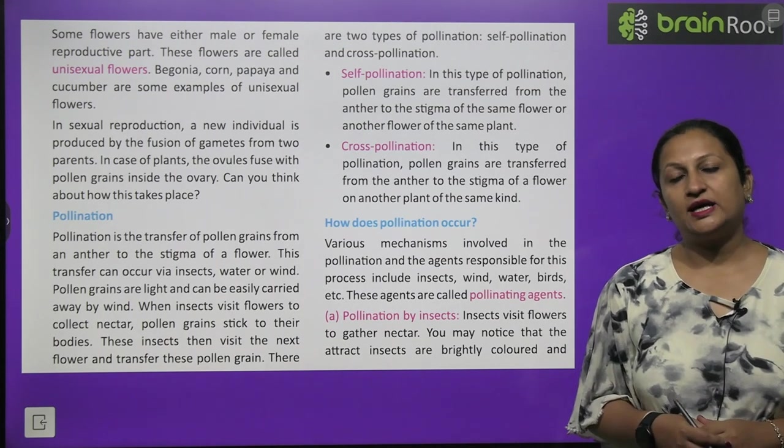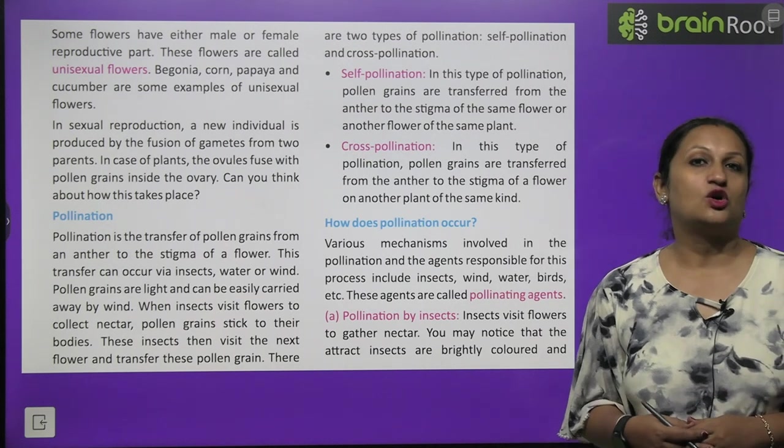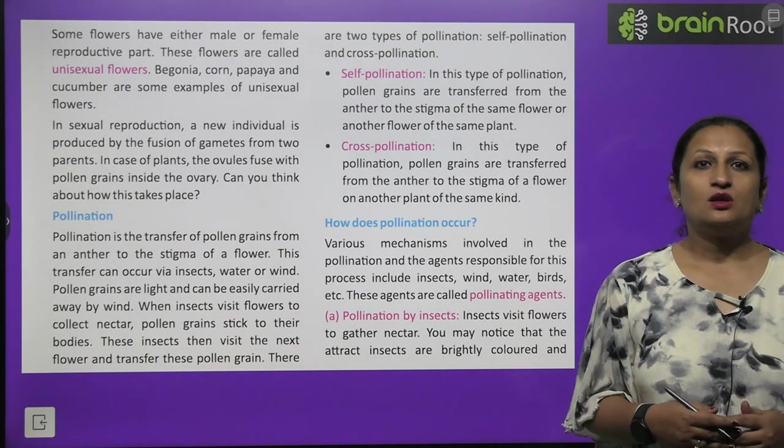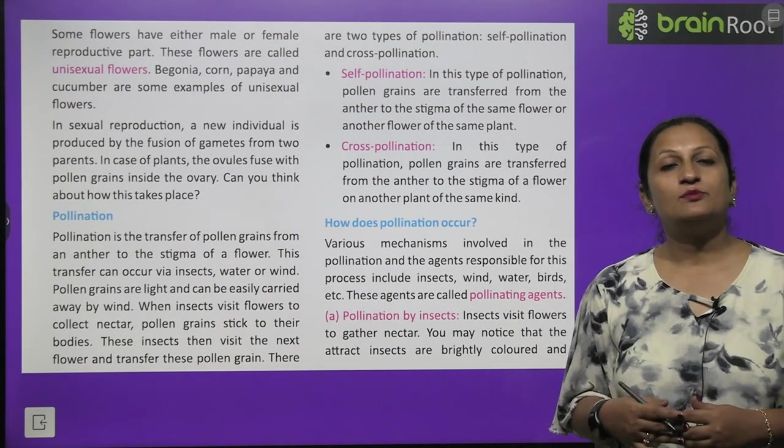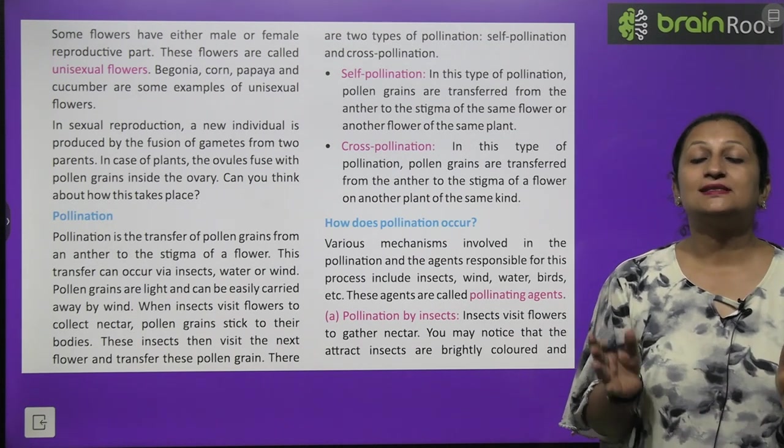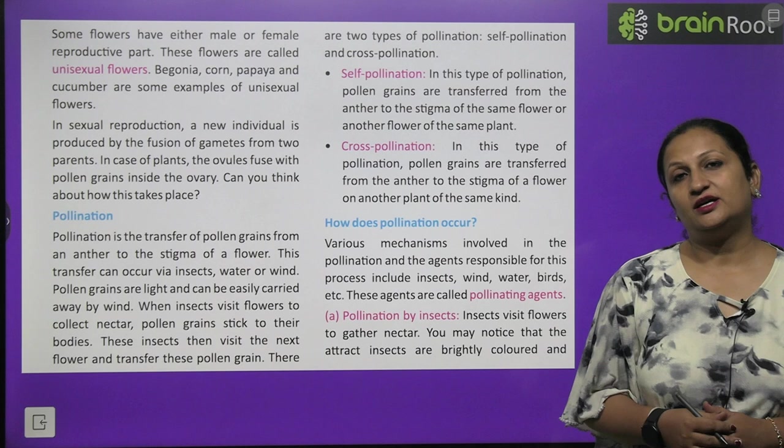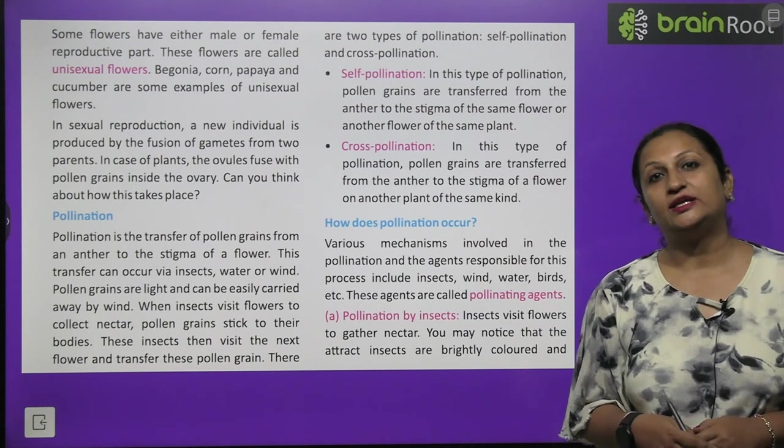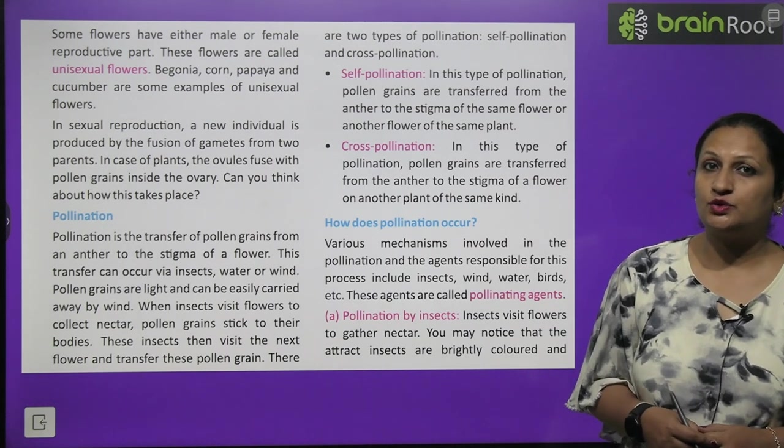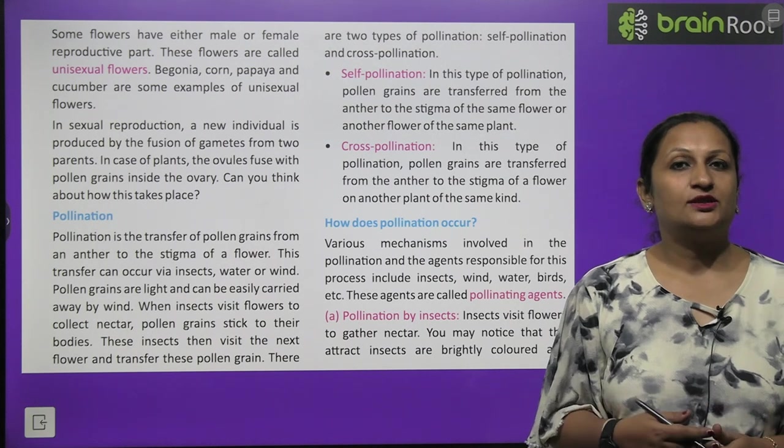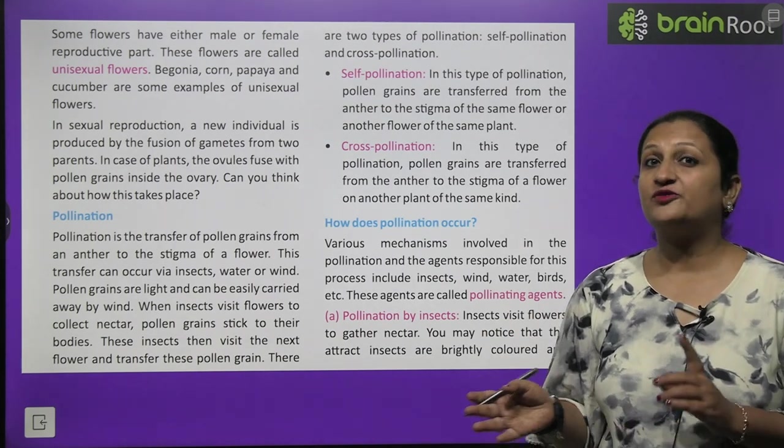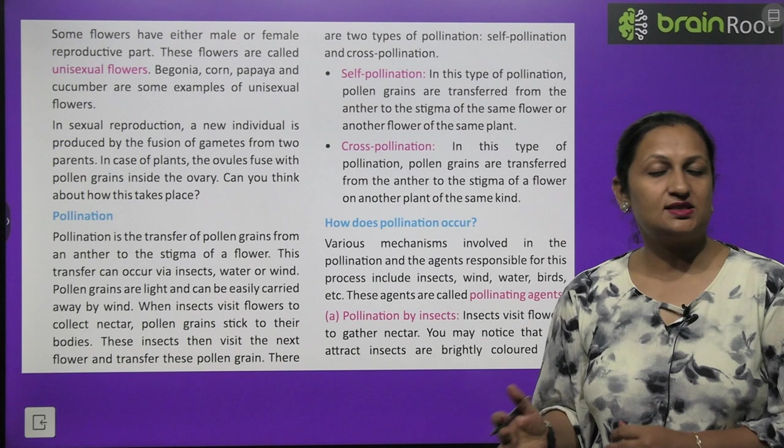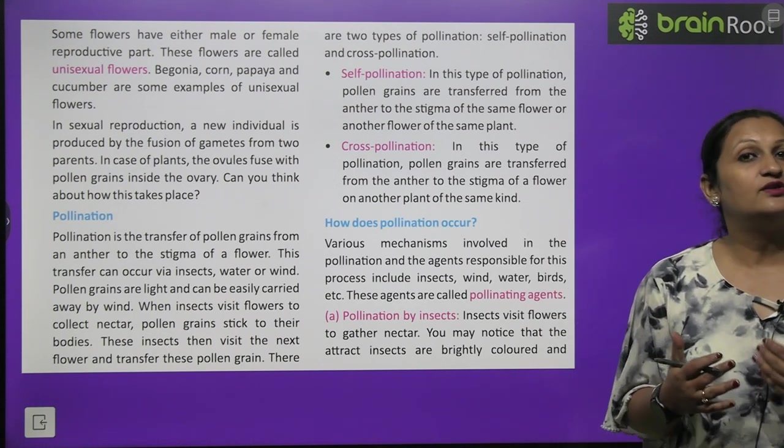Now pollination is also of two types children. One is self pollination and one is cross pollination. What does self pollination mean? When pollen grains are transferred from the anthers to the stigma of the same plant or the other flower of the same plant, when pollen grains transfer happens in the same place, we call it self pollination. Or there is cross pollination when pollen grains from anthers of one plant are transferred to some other plant of same species. If rose's pollen grains are there, then they should go and fall on rose flower itself. Only then pollination will happen, only then fertilization will happen.